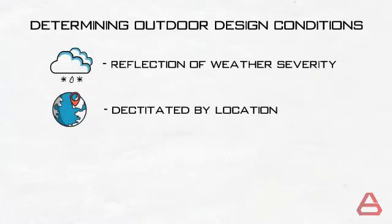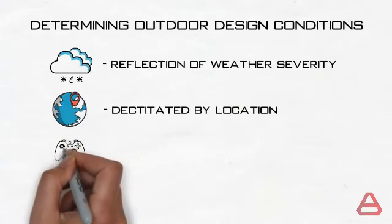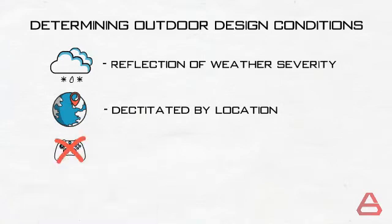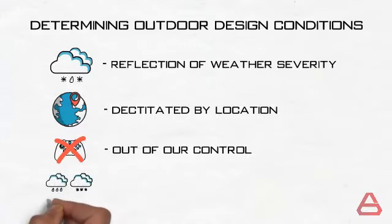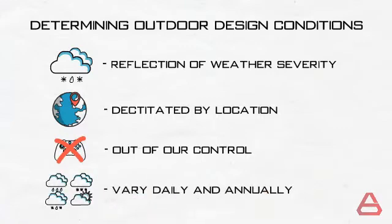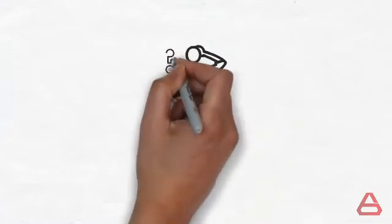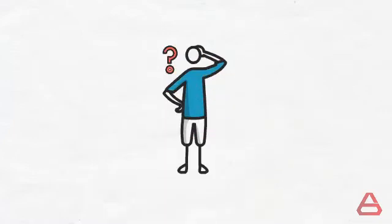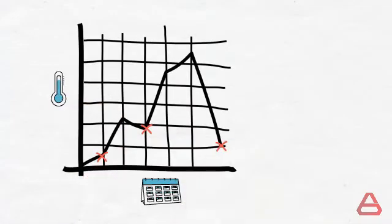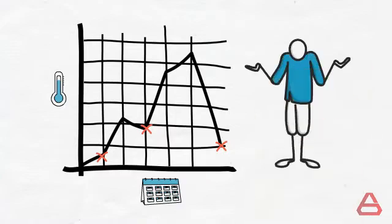Unlike the indoor conditions which we control and try to keep constant, the outdoor conditions are out of our control. Finally the outdoor climate varies on a day-to-day and year-to-year basis. Okay so you can see that outdoor conditions are a bit more complicated than indoor ones. The severity of the weather is different at different times. What does one choose?